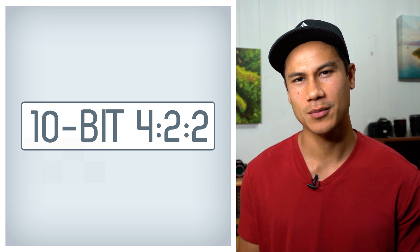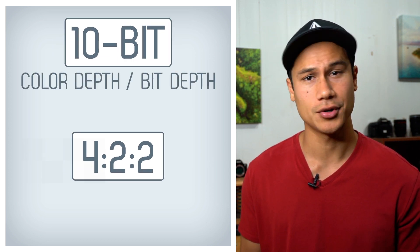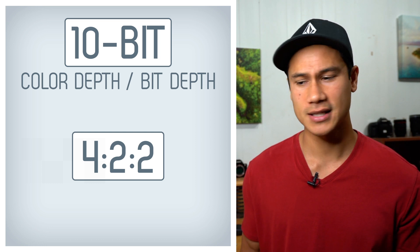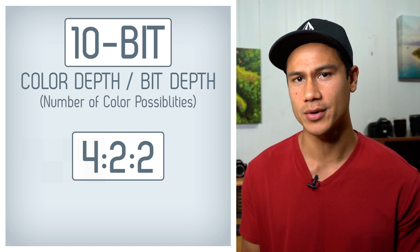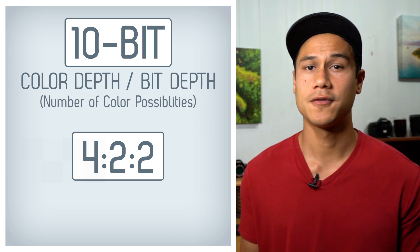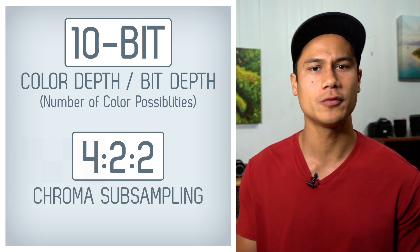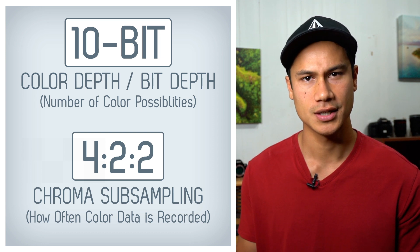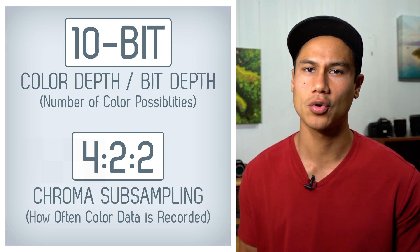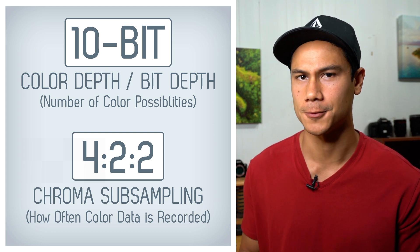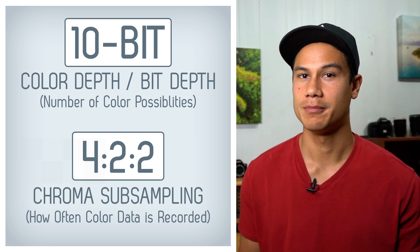So what exactly is 10-bit 422, and why does it even matter? Well, 10-bit and 422 are just different ways that describe how your camera actually captures color. The 10-bit is your color depth, or your bit depth, and that'll basically tell you how many color possibilities you have for any given pixel. The 422 refers to something called chroma subsampling, and that'll tell us how often we take a color sample from the image, because most of the time you're not actually recording color data from every single pixel. So let's break it down, starting with bit depth.